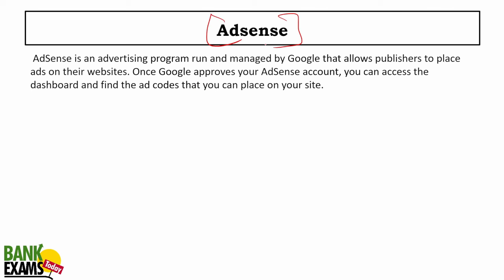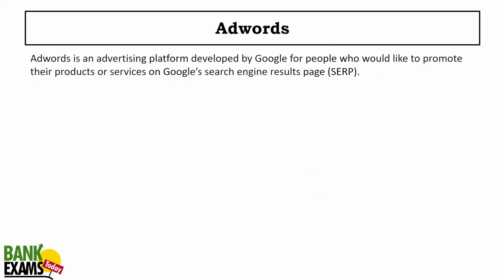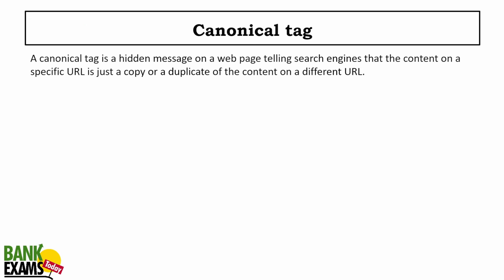AdSense: on many websites you see advertisements — those are Google AdSense ads. Publishers get paid for showing those ads, advertisers pay for them, and Google takes a cut of generally 30%. AdWords has been renamed to Google Ads — advertisers can go on Google Ads and pay for campaigns, while publishers register on AdSense.